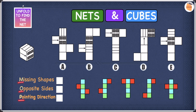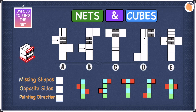Now let's use MOP to help us. M is missing shapes, O is opposite sides, and P is pointing directions. Let's start with missing shapes first. Looking at the cube, we have three shapes: an arrow, a window, and a stripy pattern. If any of these are missing in one of the nets, we cross that option off. In A we have the arrow, the window shape, and the stripy pattern, so A is fine.